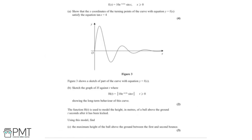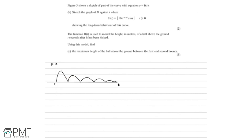Now part c: h(t) models the height in metres of a ball above the ground t seconds after it has been kicked. We need to find the maximum height between the first and second bounce. Here is a smaller version of the graph from the previous part. The turning point we need is the peak between the first and second bounce — the ball is kicked here, falls, has its first bounce here, reaches a maximum, then has its second bounce.